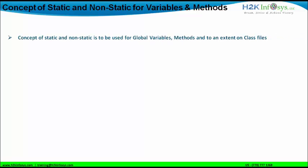Let us understand the concept first. The concept of static and non-static is to be used for global variables, methods, and to an extent on class files. You can use static and non-static for class files if it is part of your nested classes concept, and that will be a separate session by itself. As far as methods we have used until now, we have used public static void methods. In this particular session, I will also show you how to create public non-static methods.